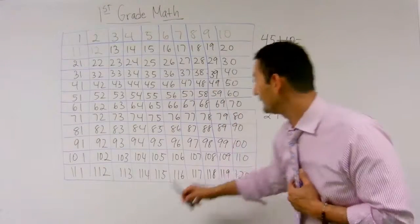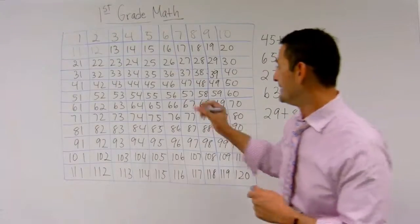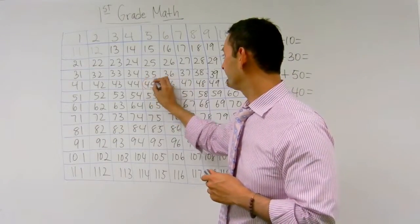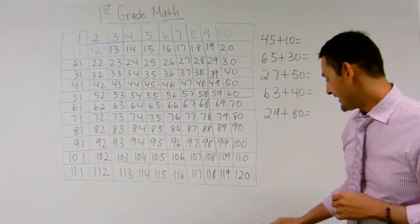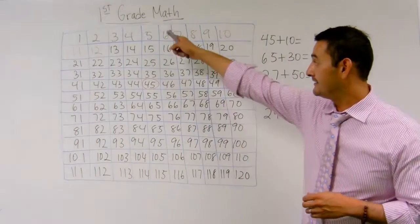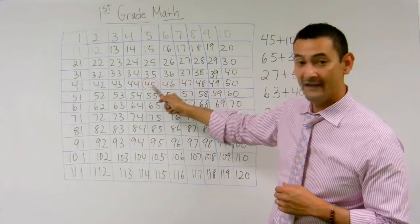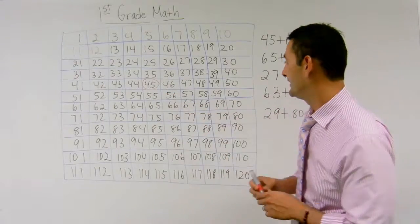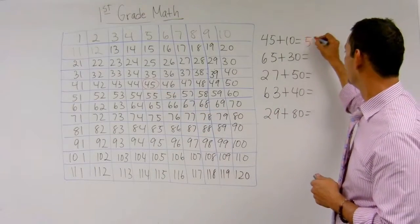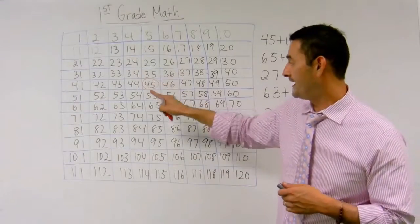So what I'm going to do is I'm going to look at the first one, 45 plus 10. So I'm going to look at this number chart, I'm going to circle 45. And we know that when we're counting by 10, we just go down. So 45 plus 10, boom, equals 55.